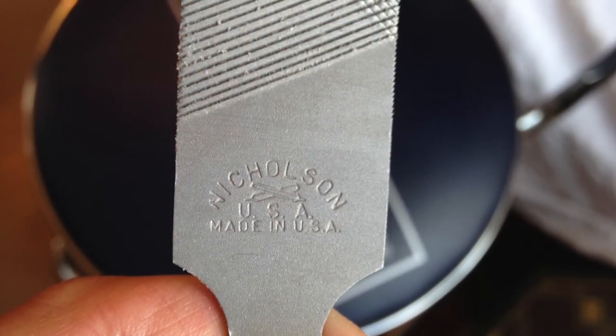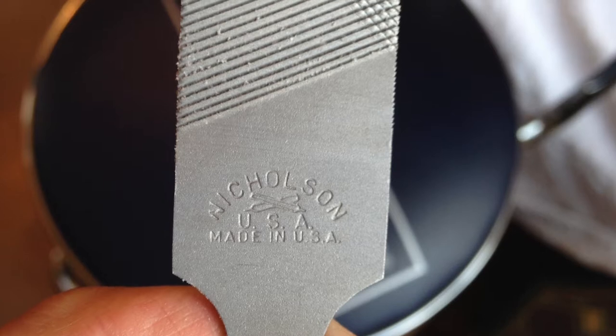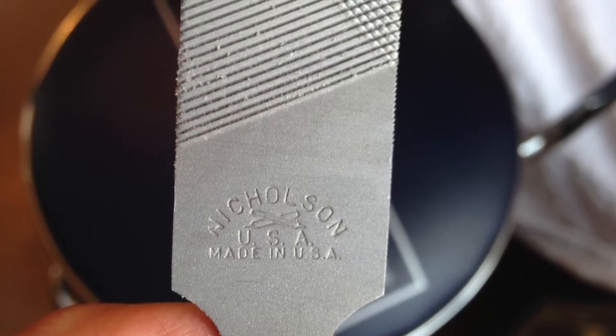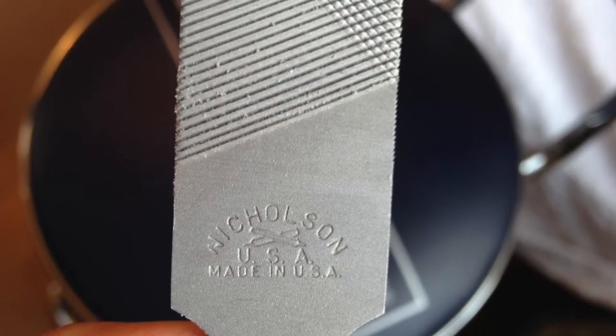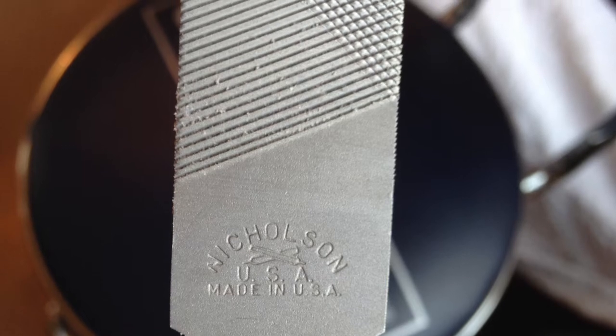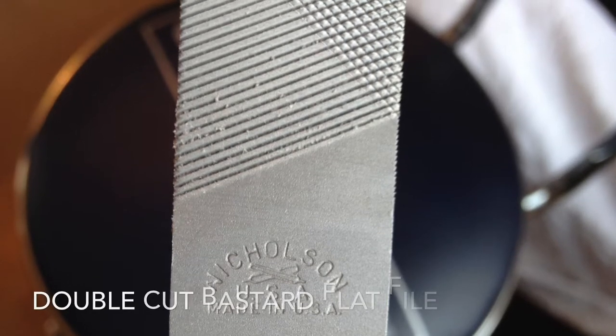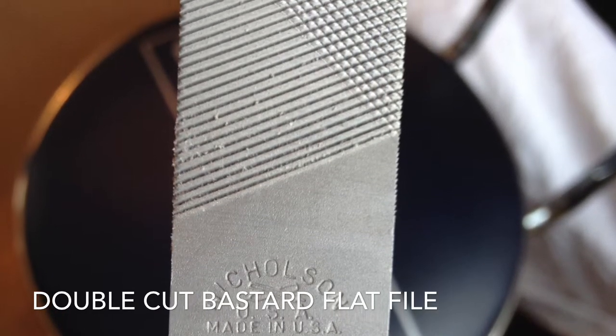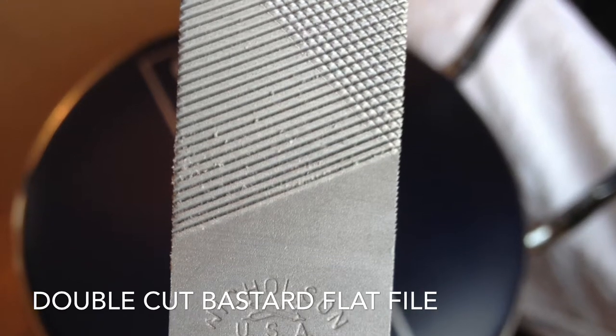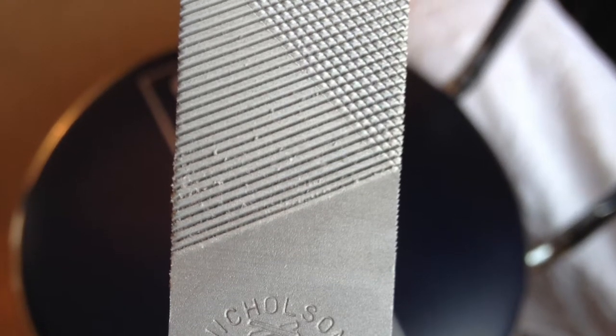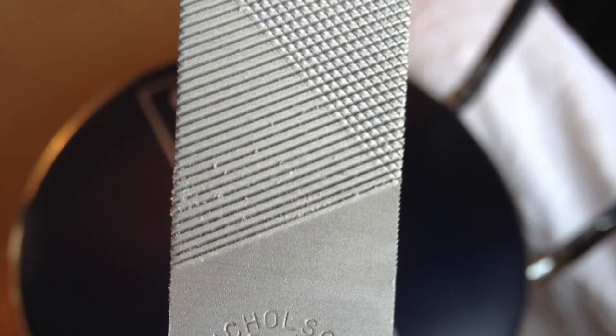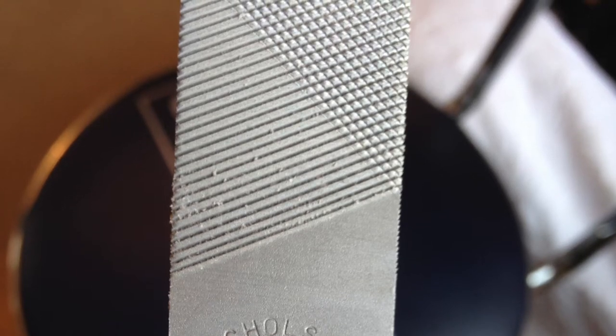For this project I've used three tools: a flat file, a triangular file, and sandpaper over a block. This one has a funny name, it's a double cut bastard. Double cut refers to parallel lines or teeth that are crossing at opposing angles all the way down the file.